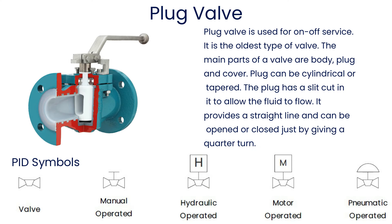Plug valve is used for on-off service. It is the oldest type of valve. The main parts of a plug valve are body, plug, and cover. The plug can be cylindrical or tapered and has a slit cut in it. It provides a straight-line flow path and can be opened or closed just by giving a quarter turn.